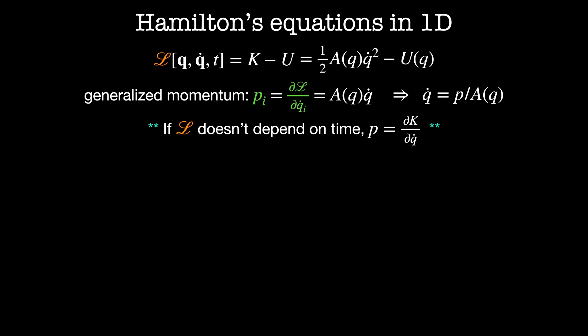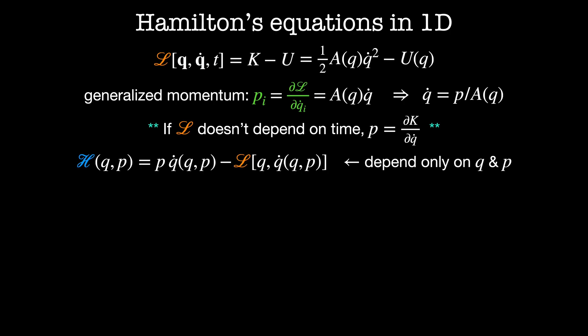If the Lagrangian doesn't depend on time, then the generalized momentum P is equal to the derivative of the kinetic energy with respect to Q dot. Then to express the Hamiltonian as a function of only Q and P, we can replace each Q dot with the equation for Q dot we derived here. So the Hamiltonian is given by P times Q dot, which is a function of Q and P, minus the Lagrangian, which is a function of Q and Q dot, which is also a function of Q and P.